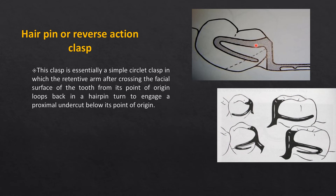The hairpin clasp is like a simple circumferential clasp, but the undercut lies on the same side as the minor connector or body of the clasp. The simple circumferential clasp takes a U-turn and comes back to engage the mesial undercut. It is used in Kennedy's Class III situations when there is a tilted abutment just distal to the edentulous space — it is called a hairpin because of the hairpin-bend shape it makes.